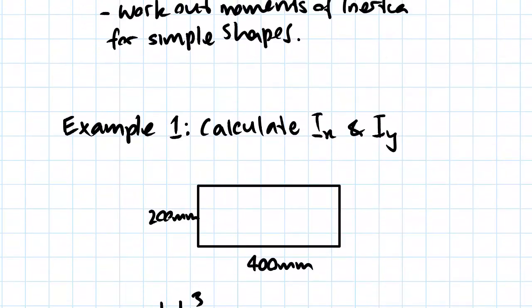So we'll start off by looking at this rectangle. We have a rectangle here that is 200 millimeters tall and 400 millimeters wide, and we've been asked to find Ix and Iy. So that is the moment of inertia relative to the x-axis and moment of inertia relative to the y-axis.